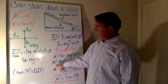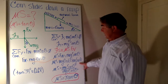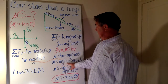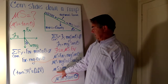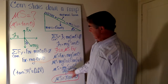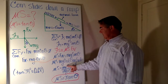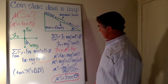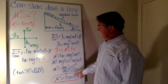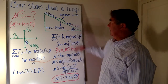Dividing both sides by mg cosine theta, the mg terms cancel. The sine of an angle divided by the cosine of that angle equals the tangent of that angle. So the result is that the coefficient of static friction equals the tangent of the angle at which the ramp is elevated.